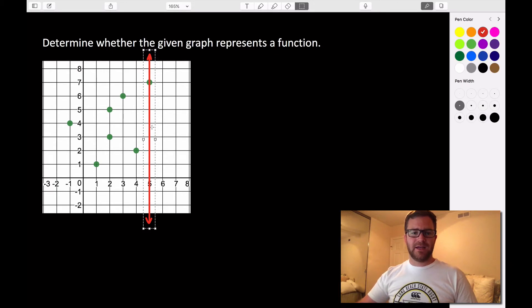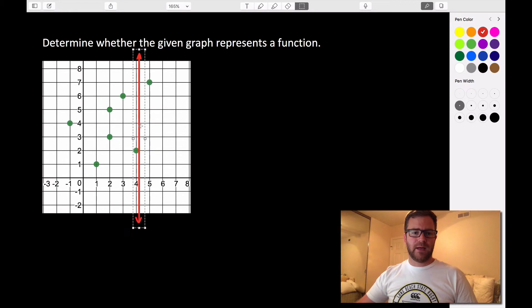So if I can take this line and move it along my graph, and it ever intersects more than one green point at any given time, it will not be a function.